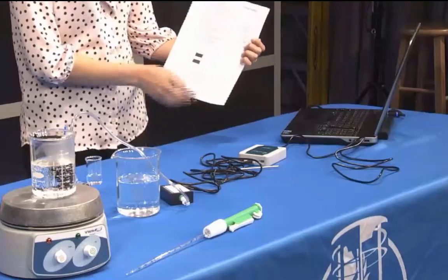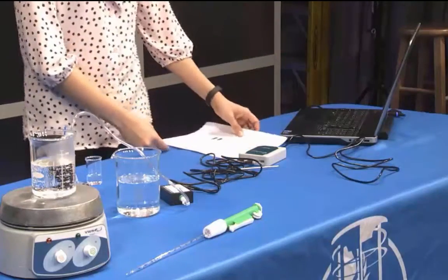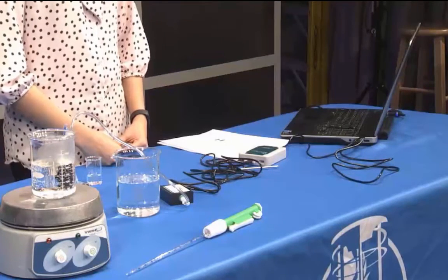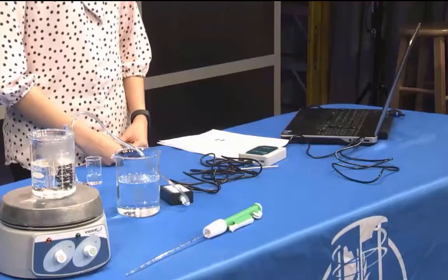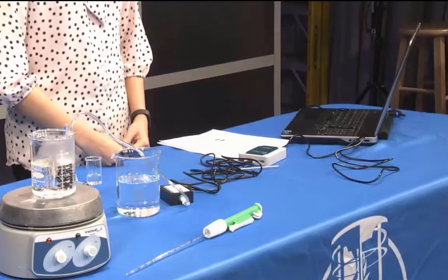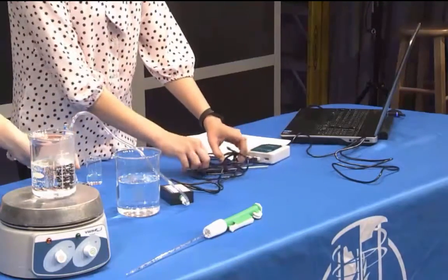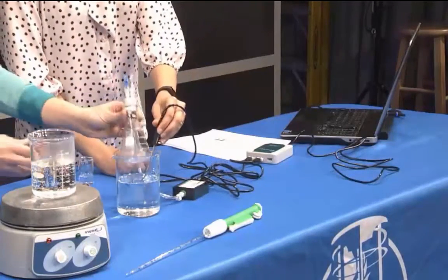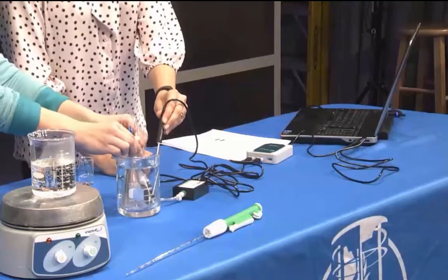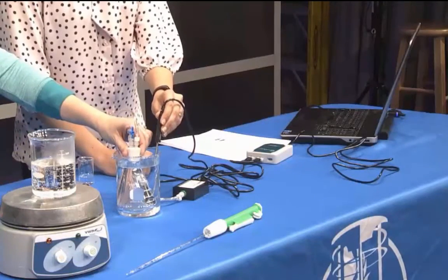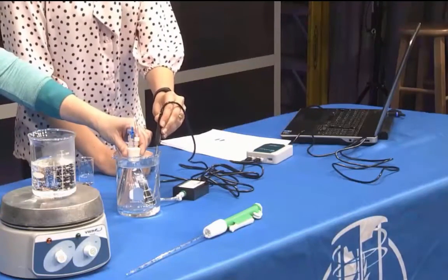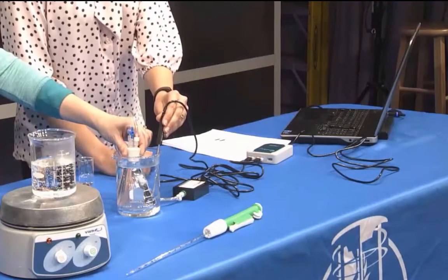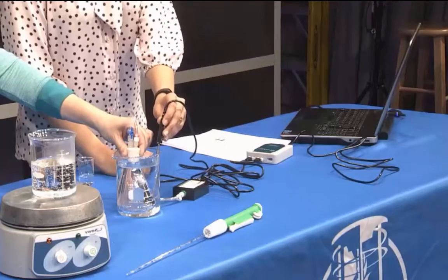Then you will need to condition the Erlenmeyer flask and the sensors to the water bath. Place the temperature probe into the room temperature water bath and place the Erlenmeyer flask in the water bath. Hold the flask down into the water bath to the bottom of the white stopper. One member of your group should hold the flask very still in the water bath the whole time during this experiment.